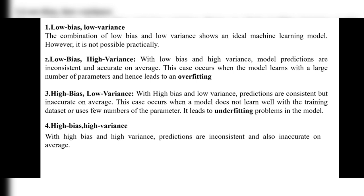Low bias and low variance cannot be achieved in practice — it is an ideal machine learning model. The next combination is low bias and high variance. Here, with low bias and high variance, model predictions are inconsistent but accurate on average. This case occurs when the model learns with a large number of parameters, and hence leads to overfitting.